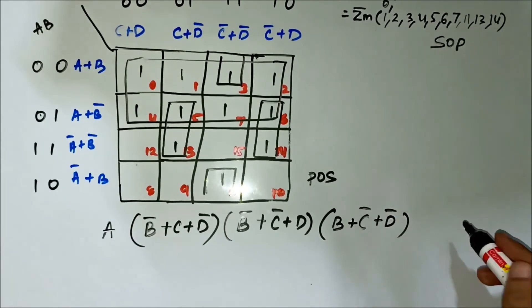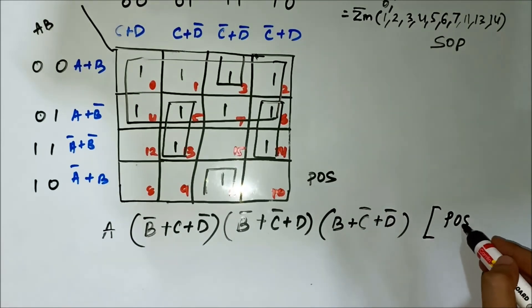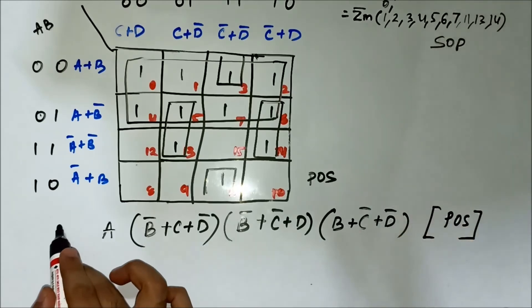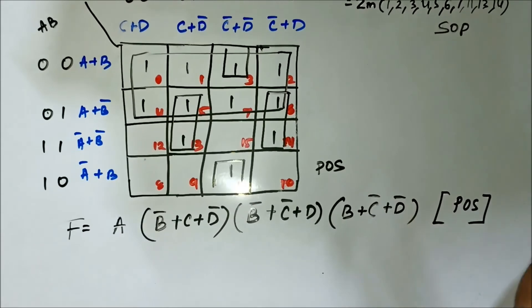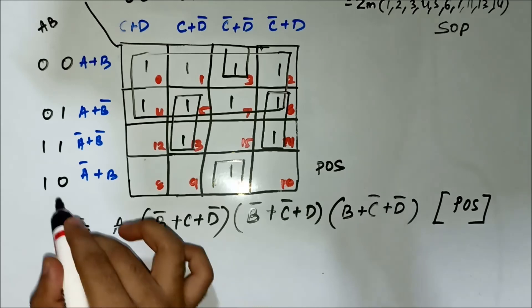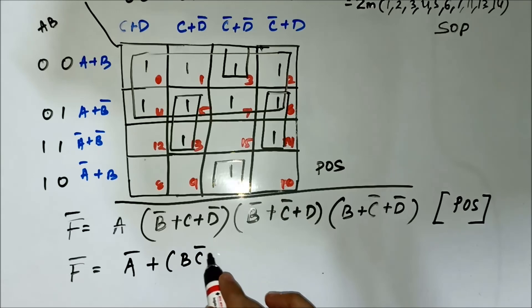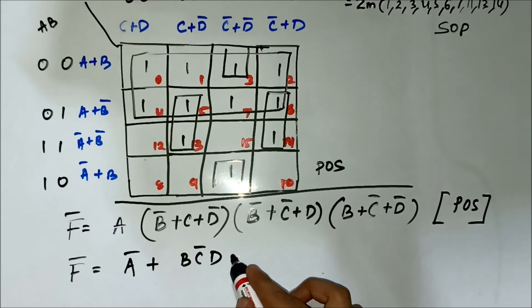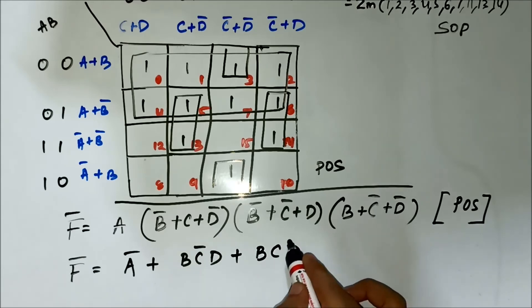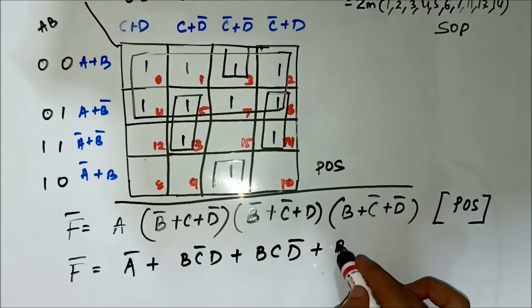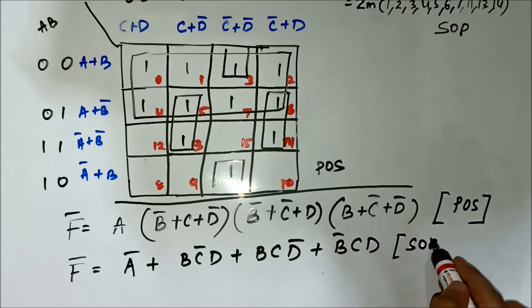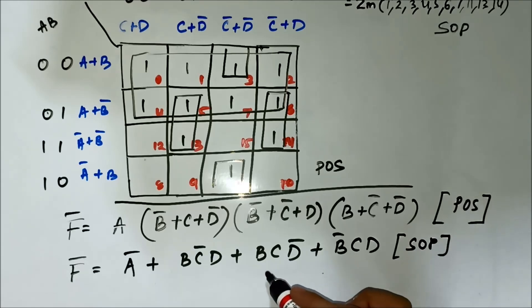As you can see, this is the POS form, and we have to convert it into SOP. We will take the complement using De Morgan's theorem and get: A bar or BC bar D or BCD bar or B bar CD. This will be the SOP form for this expression.